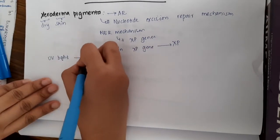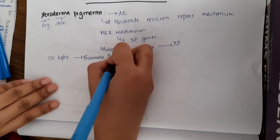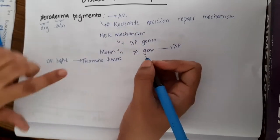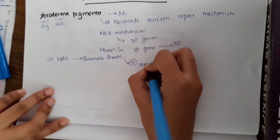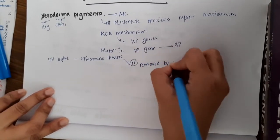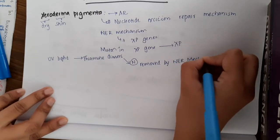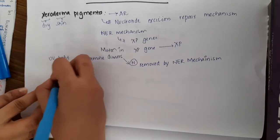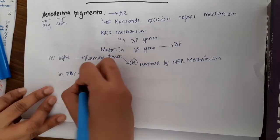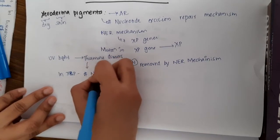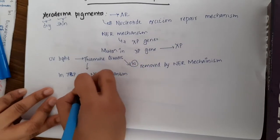This UV light will induce the formation of thymine dimers. Normally these thymine dimers are removed by nucleotide excision repair mechanisms. But in this condition, these thymine dimers are not repaired in xeroderma pigmentosa due to defective nucleotide excision repair mechanisms, and these thymine bases are not repaired.